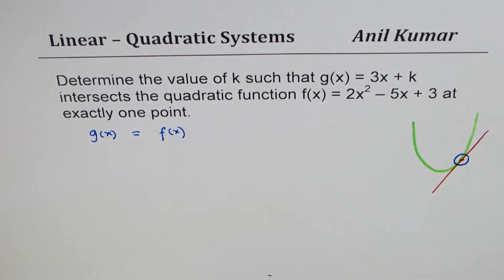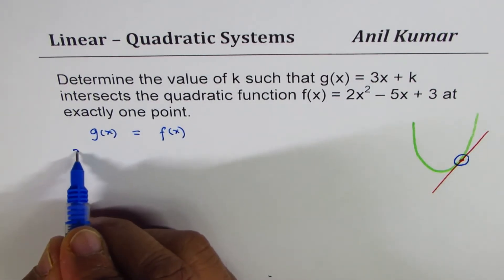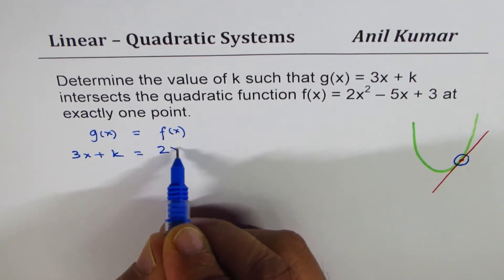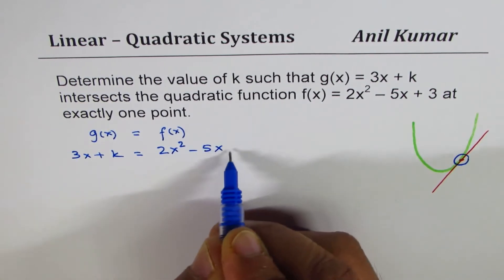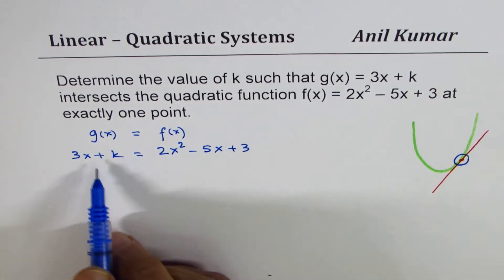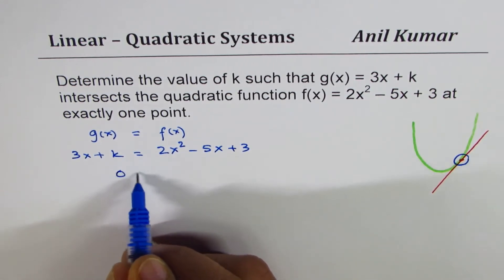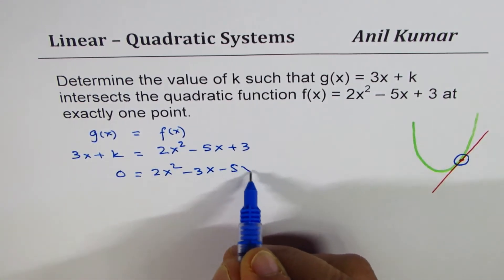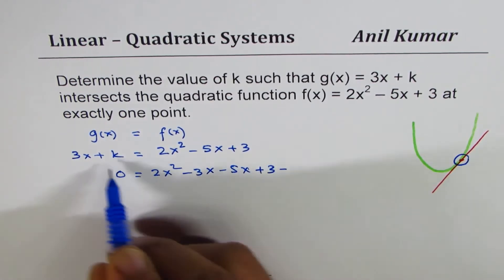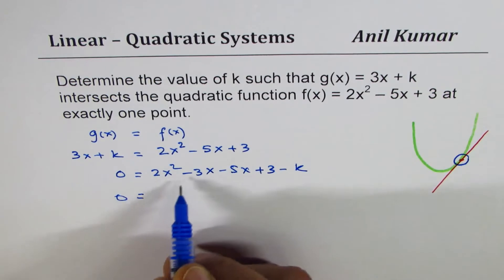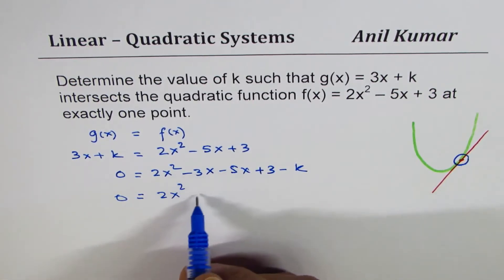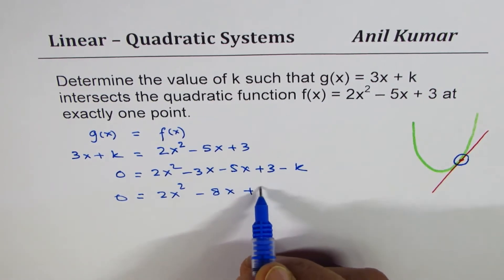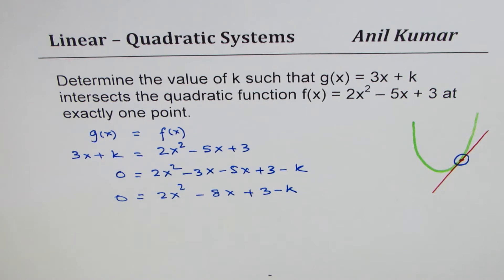g(x) is given as 3x + k and f(x) is 2x² - 5x + 3. They should be equal, so let's bring everything to one side and solve for x. We get 2x² - 3x - 5x + 3 - k, which combines to give 2x² - 8x + (3 - k). That becomes a quadratic equation, which could have one solution, two solutions, or no solution.